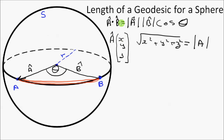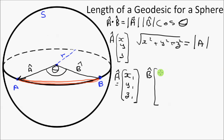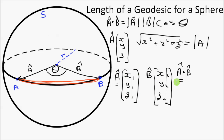The vector dot product can be calculated by writing the two vectors as column vectors with components (x1, y1, z1) for vector A and (x2, y2, z2) for vector B. The dot product A·B is the sum of pairwise products of components: x1·x2 + y1·y2 + z1·z2.